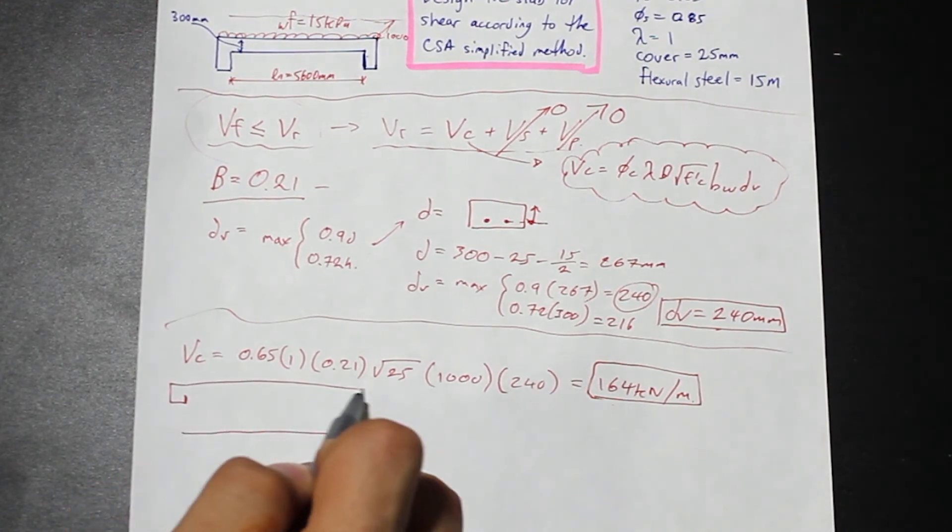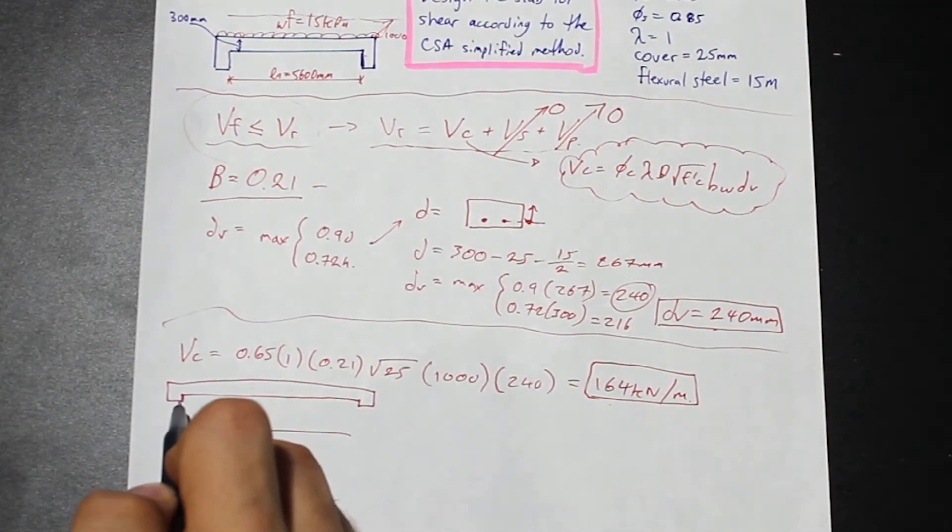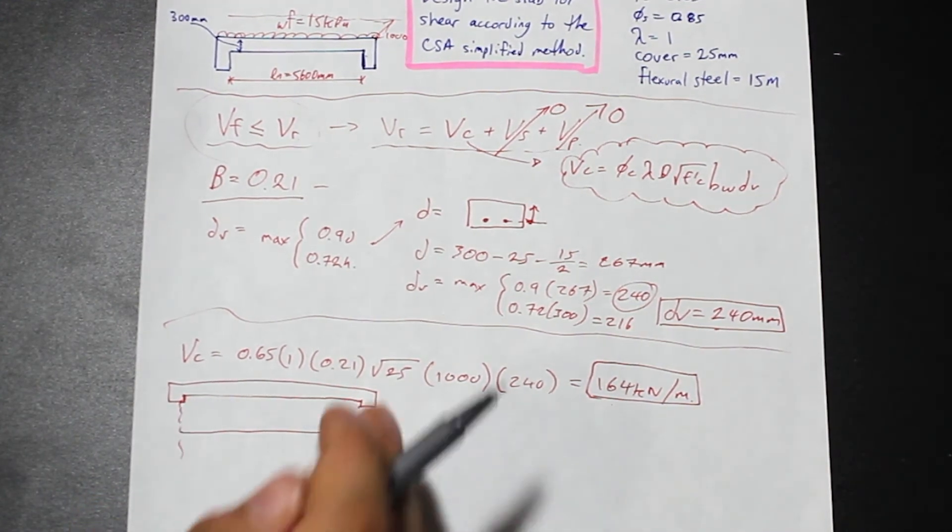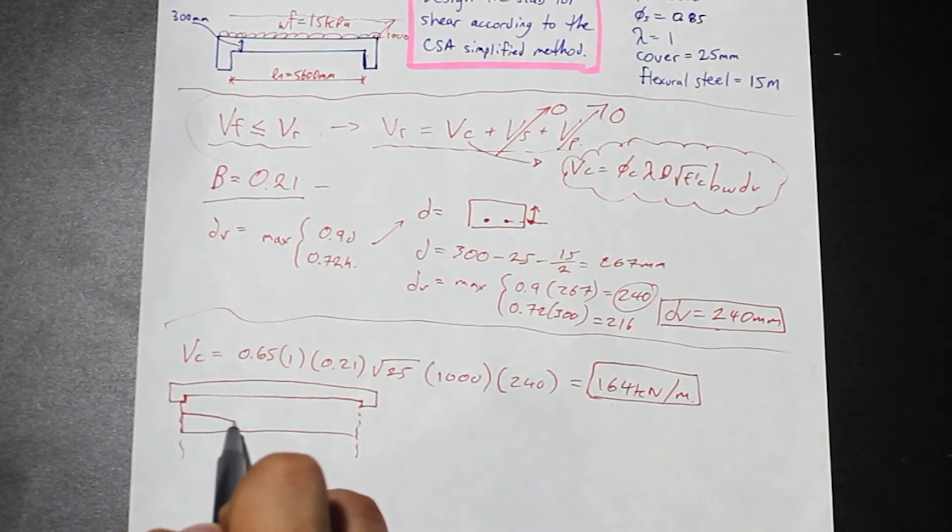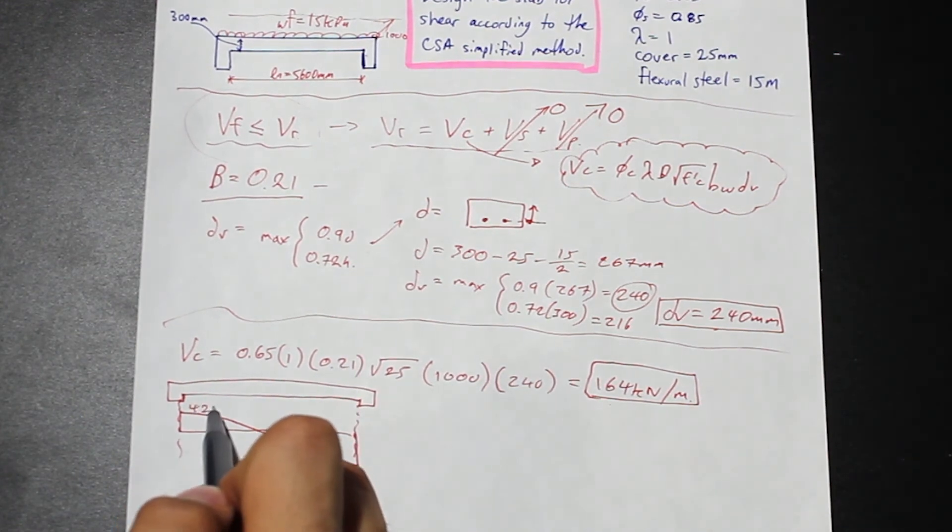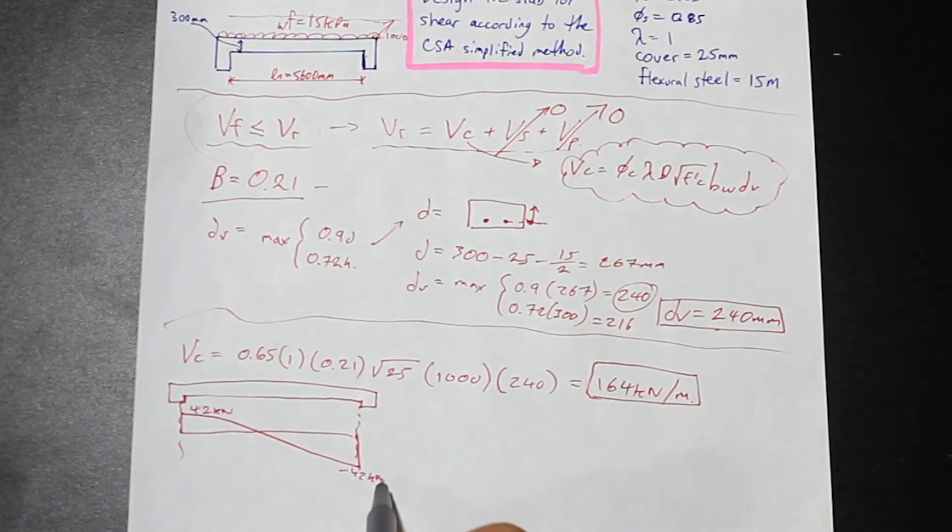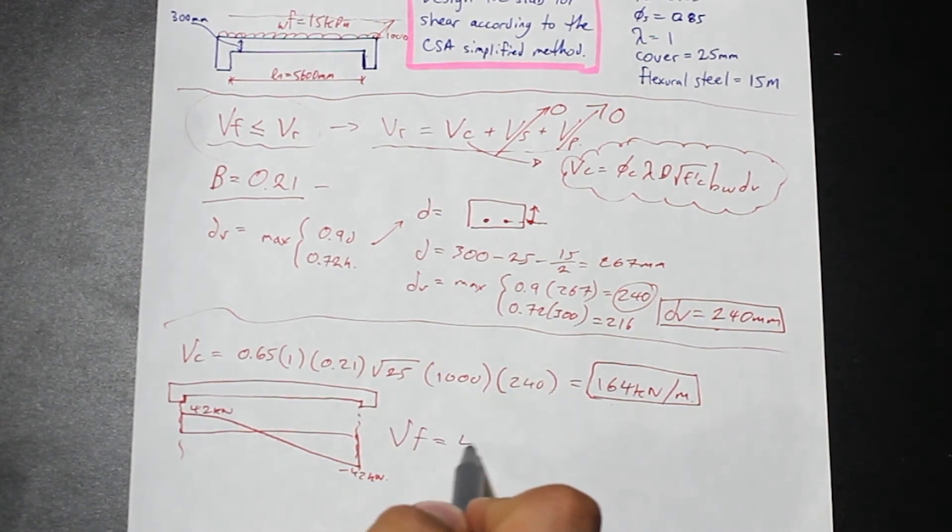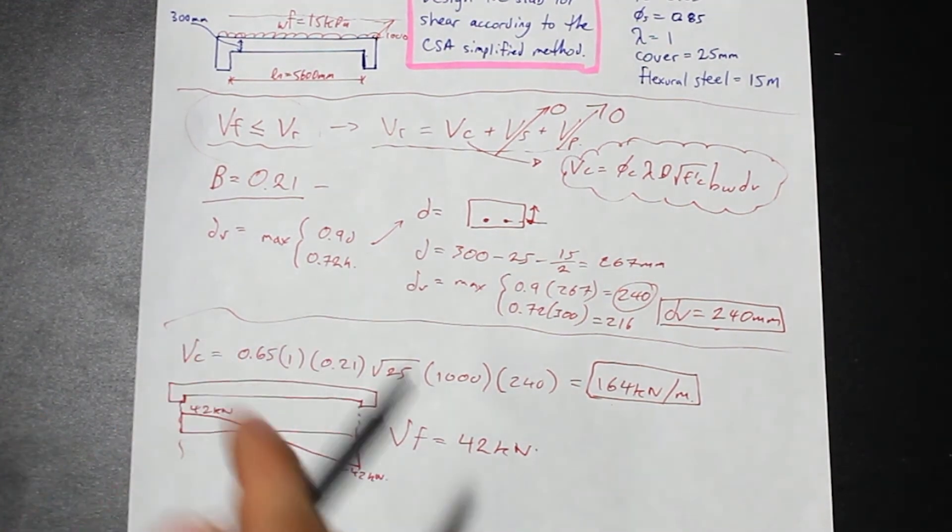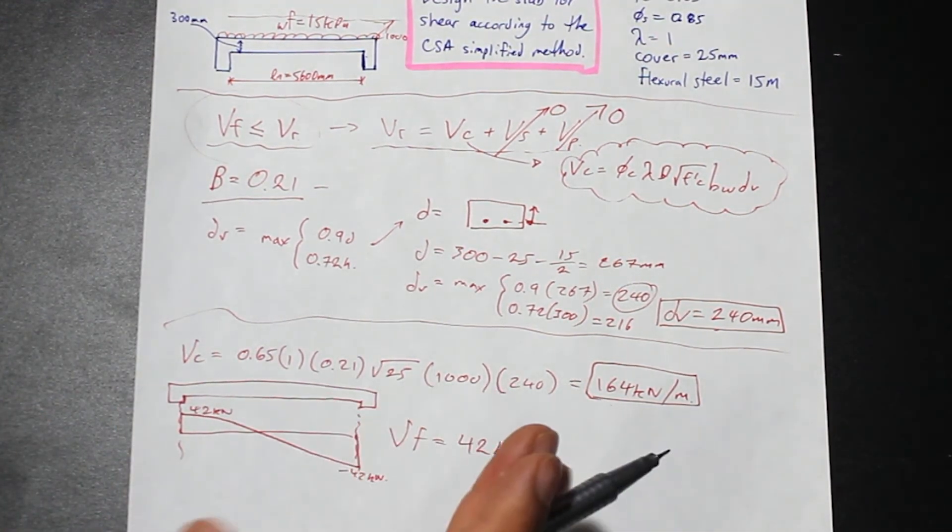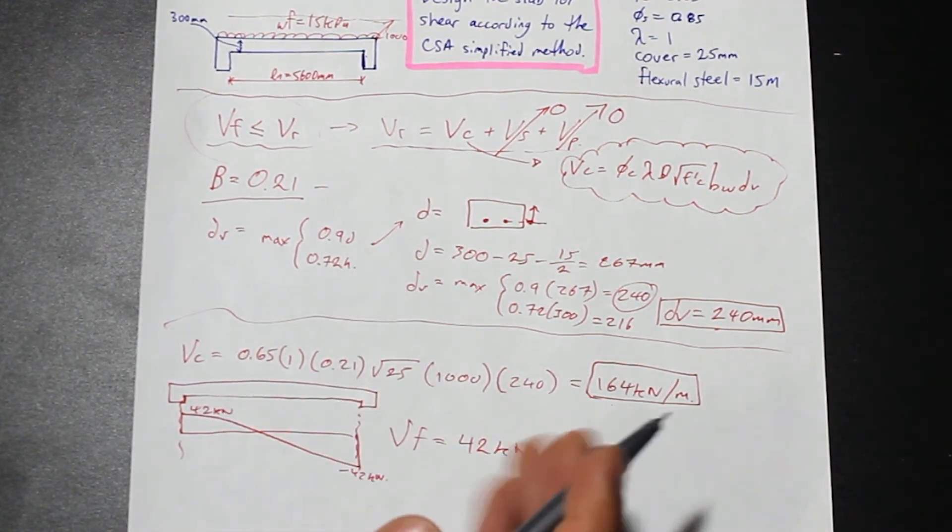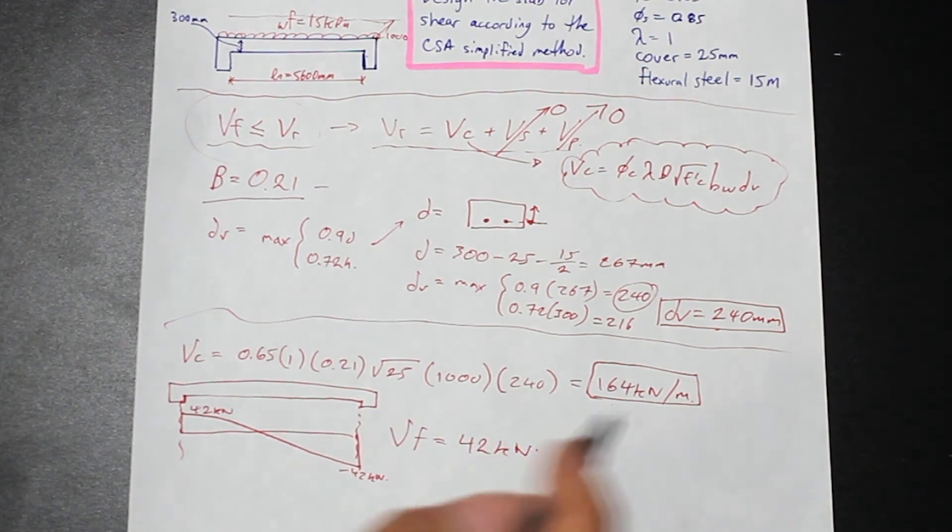I'm just going to show you the shear force diagram for this. If this is our slab, and the reason why we're using ln is because we care about the shear force at the face of the support. We don't care about it at the center. Our shear force diagram looks something like this, where we have 42 kilonewton and negative 42 kilonewton. Our VF is 42 kilonewton. This is just the shear force at the support of a uniformly distributed load and a simply supported beam or member. Go ahead and calculate this on your own. If you're not sure how we arrived at 42, we can probably help you out in the comments.